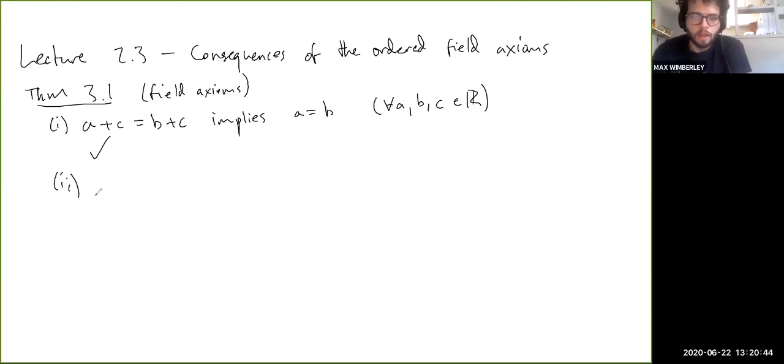So this one is about multiplying by zero. So it's saying a times zero equals zero for all a in R or whatever. And again, it's one of those things that seems obvious, but actually it takes a little bit of work to justify.